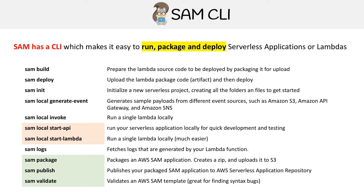Starting at the top, we have SAM build, which prepares the Lambda source code to be deployed by packaging it for upload. It doesn't upload it — it just packages it into an artifact. The next one is SAM deploy, which uploads the Lambda package code as an artifact and then deploys it. If you're wondering what an artifact is, it's just a fancy word for a zip file.